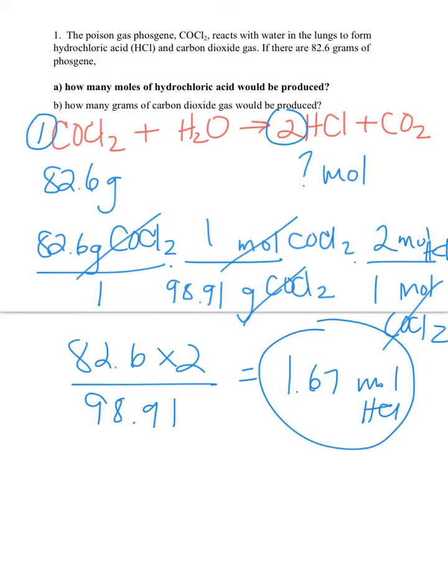I'm going to use three sig figs in my answer because 82.6 is three sig figs. Now for question B, we want to know how many grams of carbon dioxide are produced.